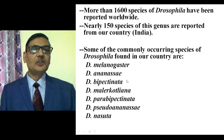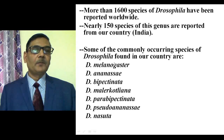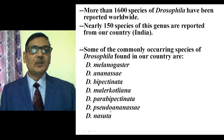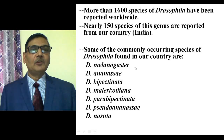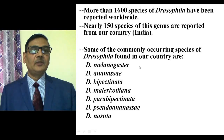Some of the species commonly found in natural conditions are Drosophila melanogaster, Drosophila ananassae, Drosophila bipectinata, Drosophila malerkotliana, Drosophila parabipectinata, Drosophila pseudo-ananassae, and Drosophila nasuta. Here in India, Drosophila melanogaster is one of the most popularly used animal models.